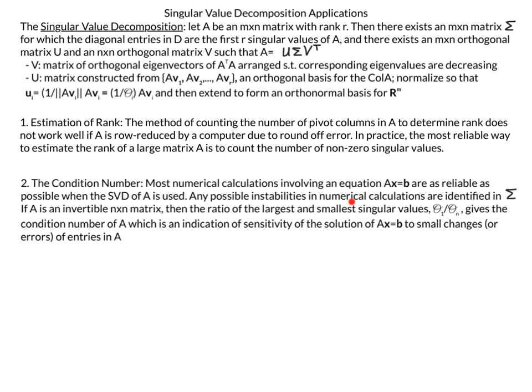And by instabilities in numerical calculations that means places where if you just perturb the solution just a little bit that all of a sudden your answer will become disproportionately incorrect to how small the system is perturbed. So if A is an invertible n by n matrix then the ratio of the largest and smallest singular values sigma 1 over sigma n gives the condition number of A which is an indication of sensitivity of the solution of Ax equals b to small changes or errors of entries in A. So here the condition number gives you the sensitivity of the solutions to small errors.